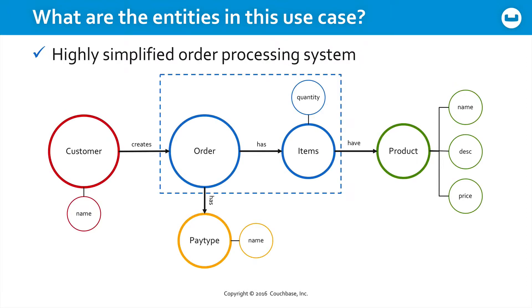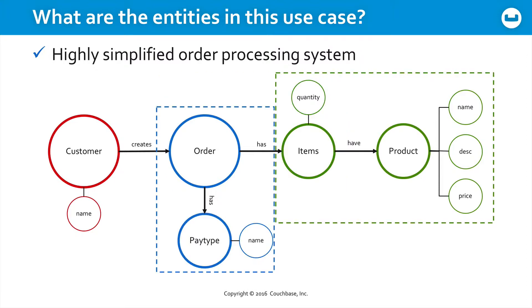Perhaps are order and items so closely related that they're a single entity? Or maybe each item and its product and the quantity is its own entity, and the order and pay type are a single entity, customer remaining a single entity of its own. This is ultimately as much art as science, and it depends largely on the programming environment that you're working with.